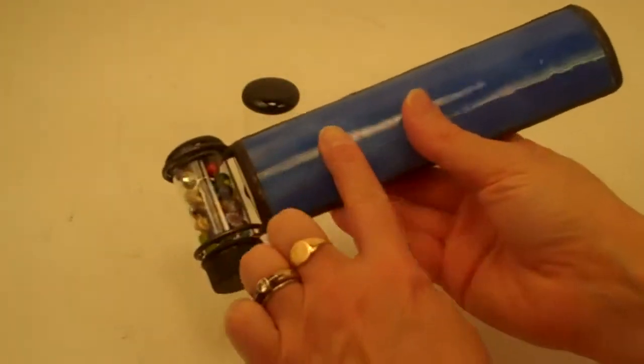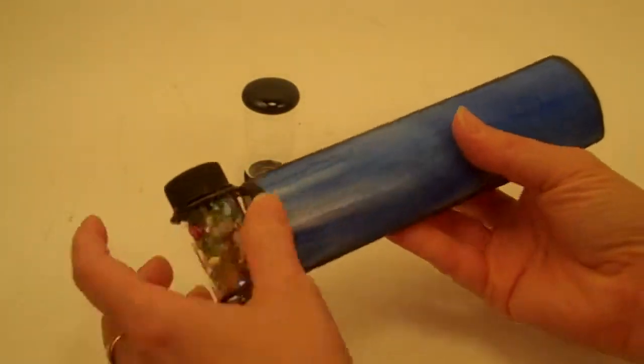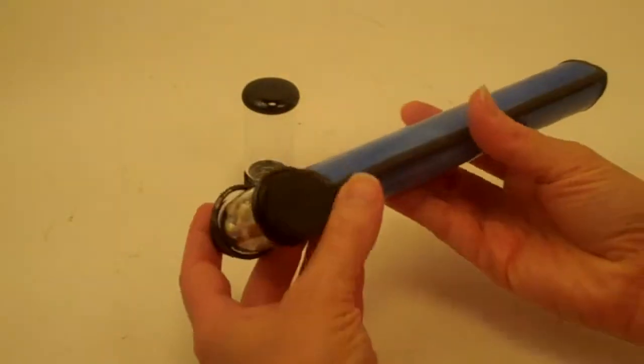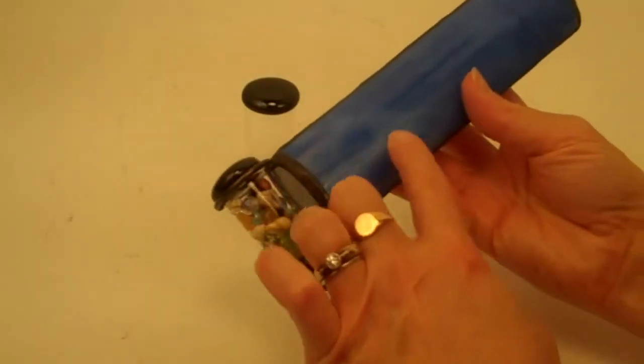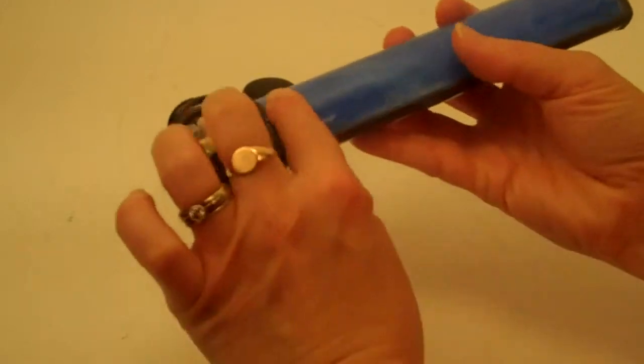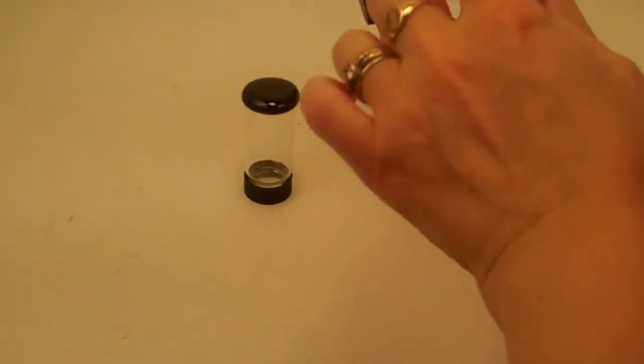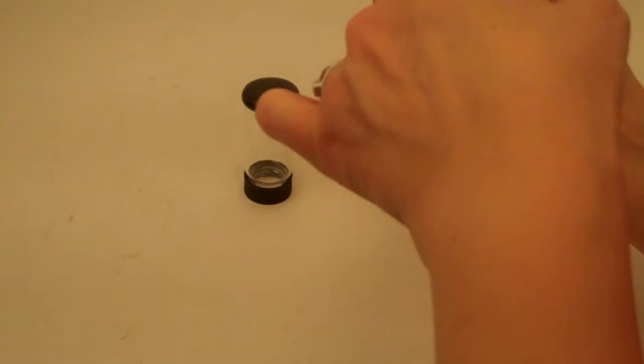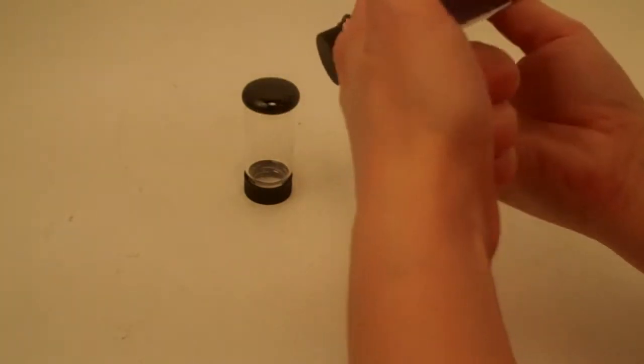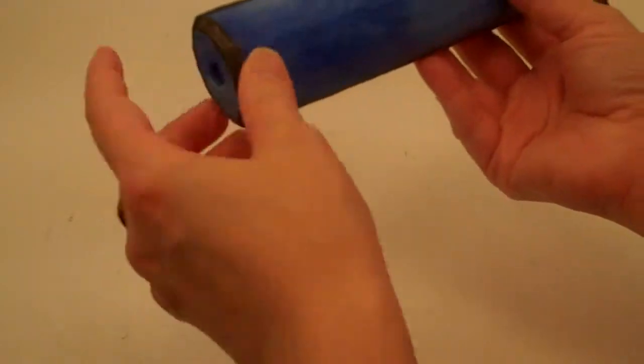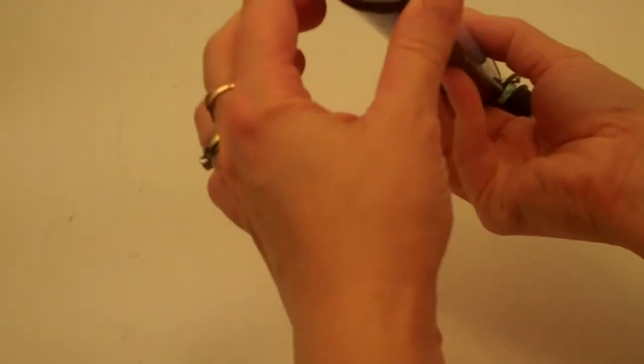Now Bob creates the exterior of his kaleidoscopes with slumped stained glass, and this one is in a beautiful blue stained glass, and he melts this in his kiln over a ceramic form to create this elliptical shape, and then the two pieces as well as an eyepiece are joined together with traditional stained glass technique.